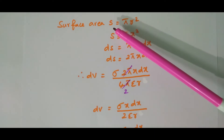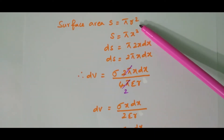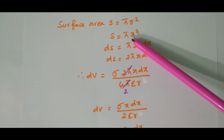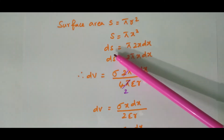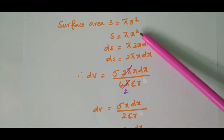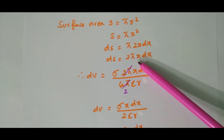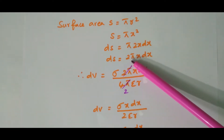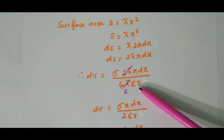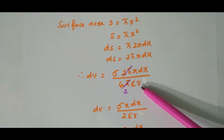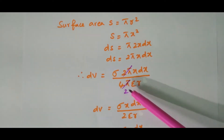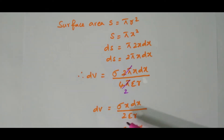The surface area of the ring is pi x squared. Differentiating both sides gives ds equal to 2 pi x dx. Substituting this into the previous equation, dV equals sigma times 2 pi x dx divided by 4 pi epsilon r. The 2 pi and 4 pi cancel to give dV equal to sigma x dx divided by 2 epsilon r.